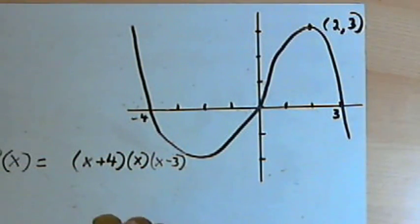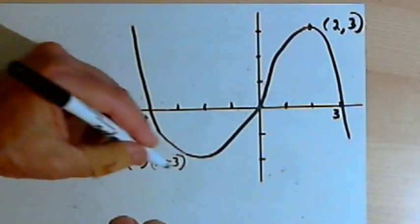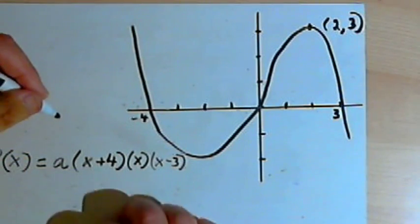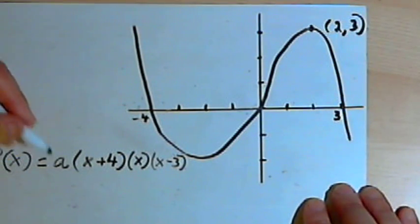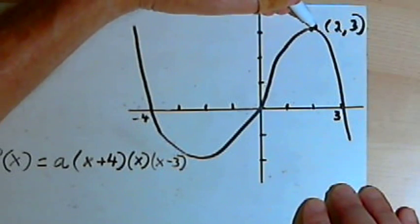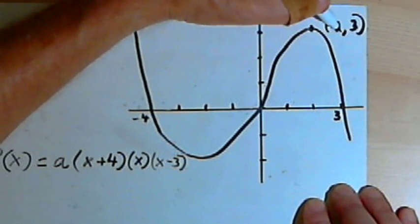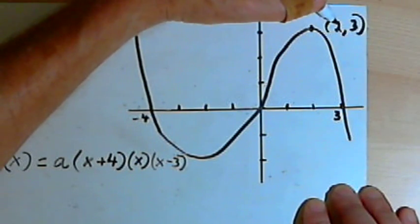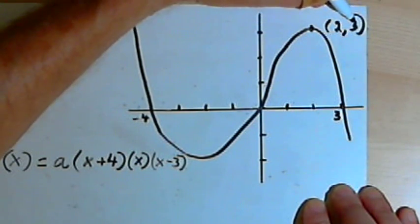And then we want to find out what constant might be multiplying these three factors. So we're going to call the constant a. And we'll find out what that constant is by using this point that I've got here. I've got this point which lies on the graph. So the 2 is an x value, the 3 is a y value.